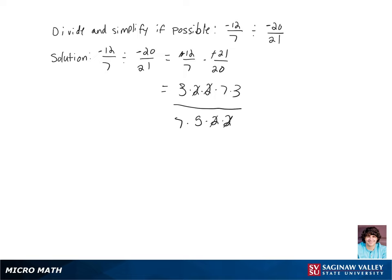We can cancel two 2s off the numerator and the denominator, and a 7 off the numerator and the denominator, so we're left with 3 times 3 over 5, which is the same as 9 over 5.